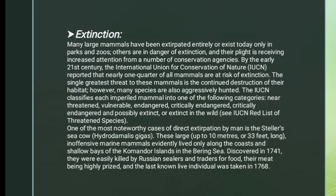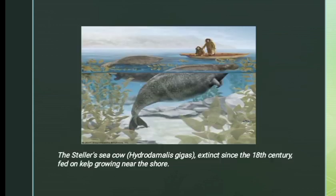The IUCN classifies each imperiled mammal into one of the following categories: Near Threatened, Vulnerable, Endangered, Critically Endangered, Critically Endangered and Possibly Extinct, or Extinct in the Wild. The Steller's sea cow, Hydrodamalis gigas, has been extinct since the 18th century. It fed on kelp and lived near the shore.